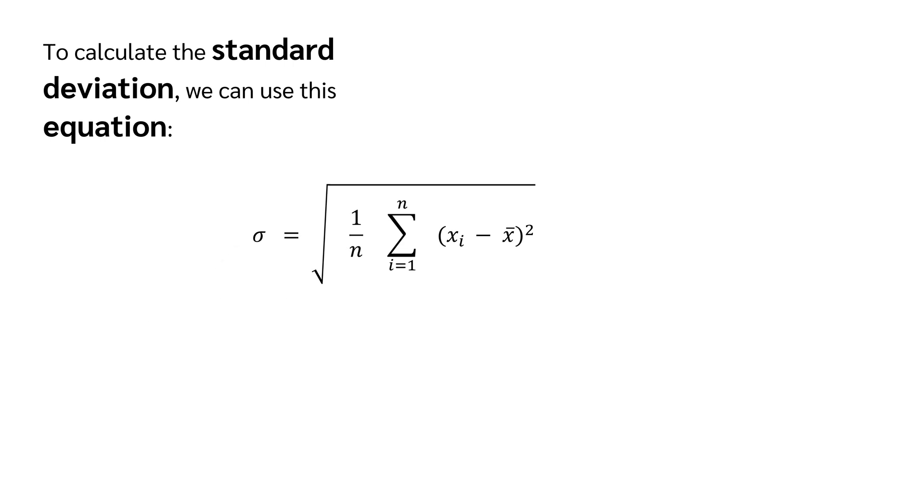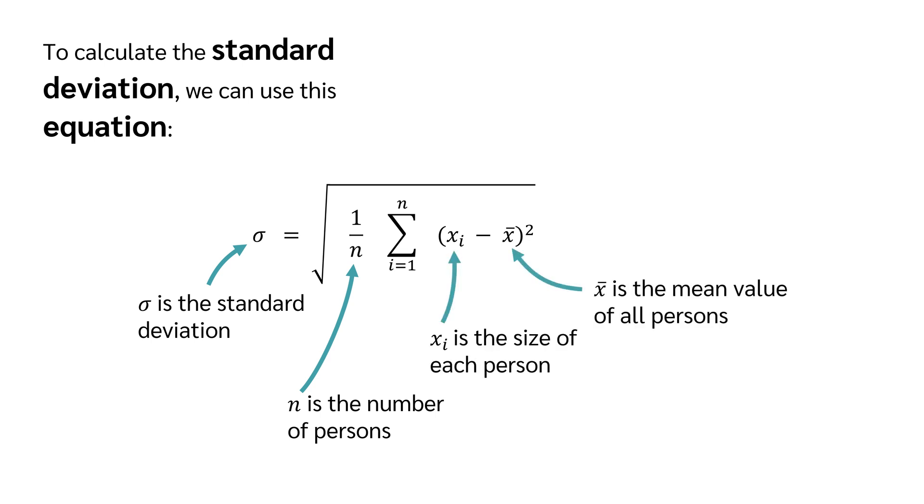Sigma is the standard deviation, n is the number of persons, xi is the size of each person and x bar is the mean value of all persons.